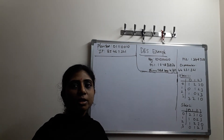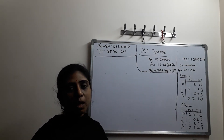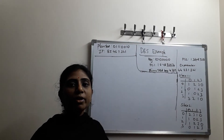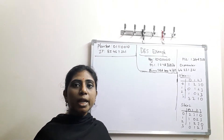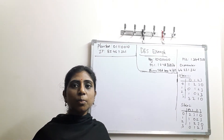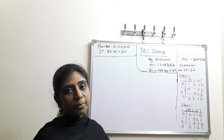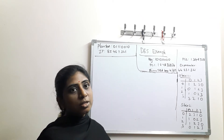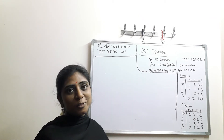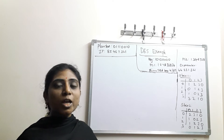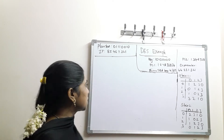Today we are going to discuss the DES example. We have already discussed the concepts, so let us now work through the example. The plain text as well as the key values will be given, and we are going to do this example on 8 number of bits.